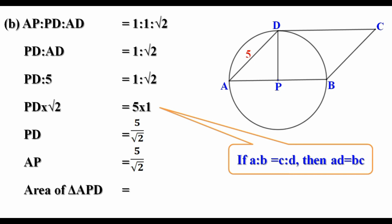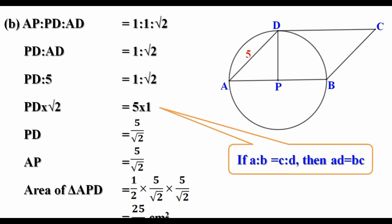Area of triangle APD equal to half into AP into PD, that is half into 5 by root 2 into 5 by root 2. In the numerator, 1 into 5 into 5, that is 25. In the denominator, root 2 into root 2 is 2, and 2 into 2 is 4. So we get 25 by 4 centimeter square. Area of triangle APD equal to 25 by 4 centimeter square.